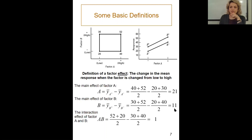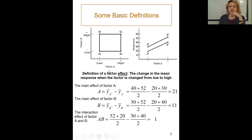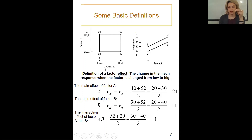There are some basic definitions we are going to use in multi-factor experiments. I have two factors — temperature and purity, for example — and each of these factors has two different levels.